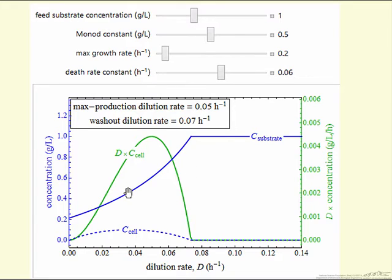The other thing that we're plotting here using the y-axis is the dilution rate times the concentration of the cell leaving. It's also a concentration, of course, of the cell in the reactor.